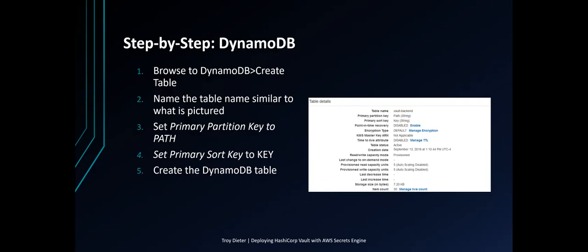Next we're going to create the DynamoDB table. Browse to DynamoDB and create the table — the main table name should be similar to what is pictured, such as 'vault-backend'. Set the primary partition key to 'Path' in all uppercase, and set the primary sort key to 'Key' in all uppercase, then create the DynamoDB table.